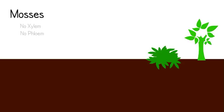Mosses are gametophyte dominant, spending most of their lives with one copy of DNA. When they are ready to reproduce, they produce both sperm and egg structures. When the egg is fertilized, it turns into a spore-forming structure, which has two copies of DNA. It then releases spores, which all have one copy of DNA.